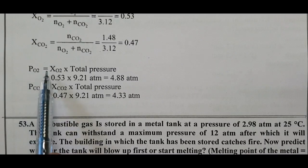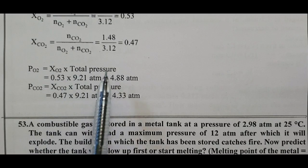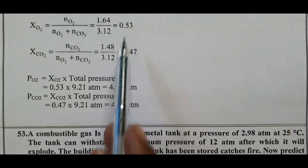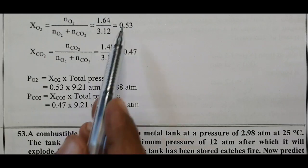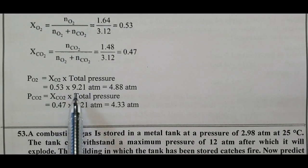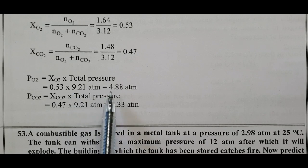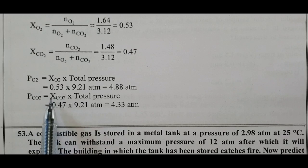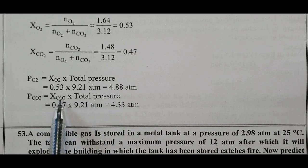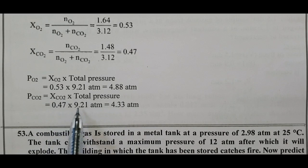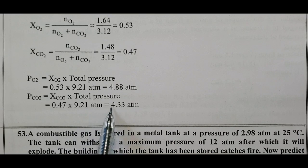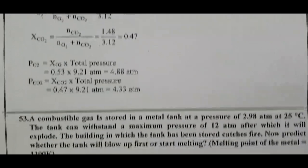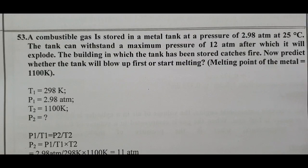Partial pressure of oxygen equals mole fraction 0.53 into total pressure 9.21, equals 4.88 atm. Carbon dioxide partial pressure equals 0.47 into 9.21, gives 4.33 atm. This is Question Number 52. Come to Question Number 53.